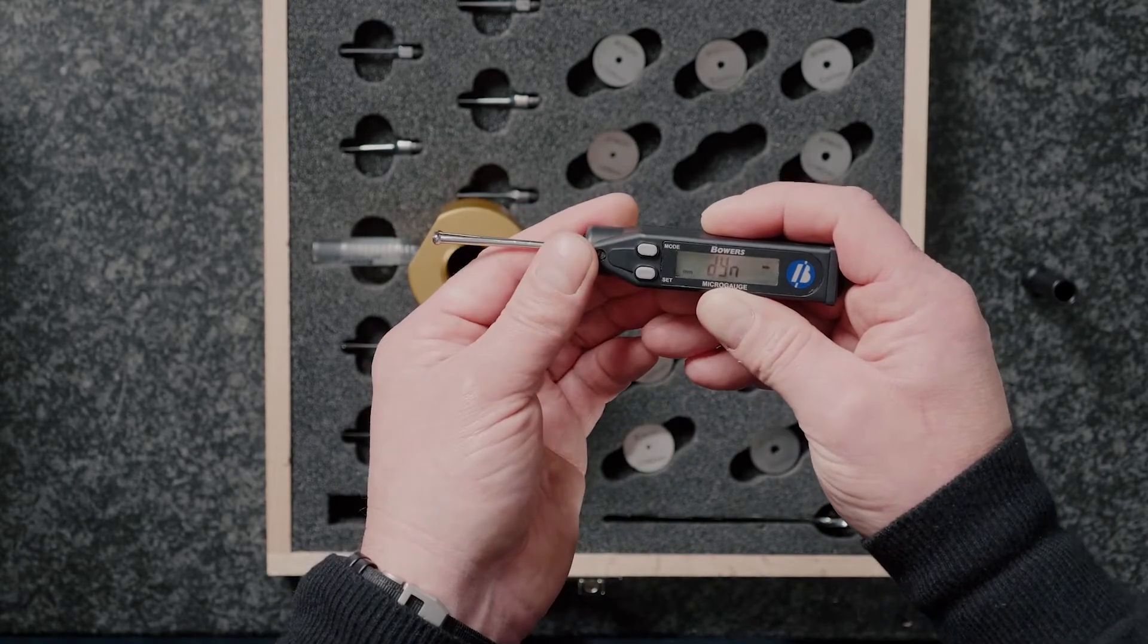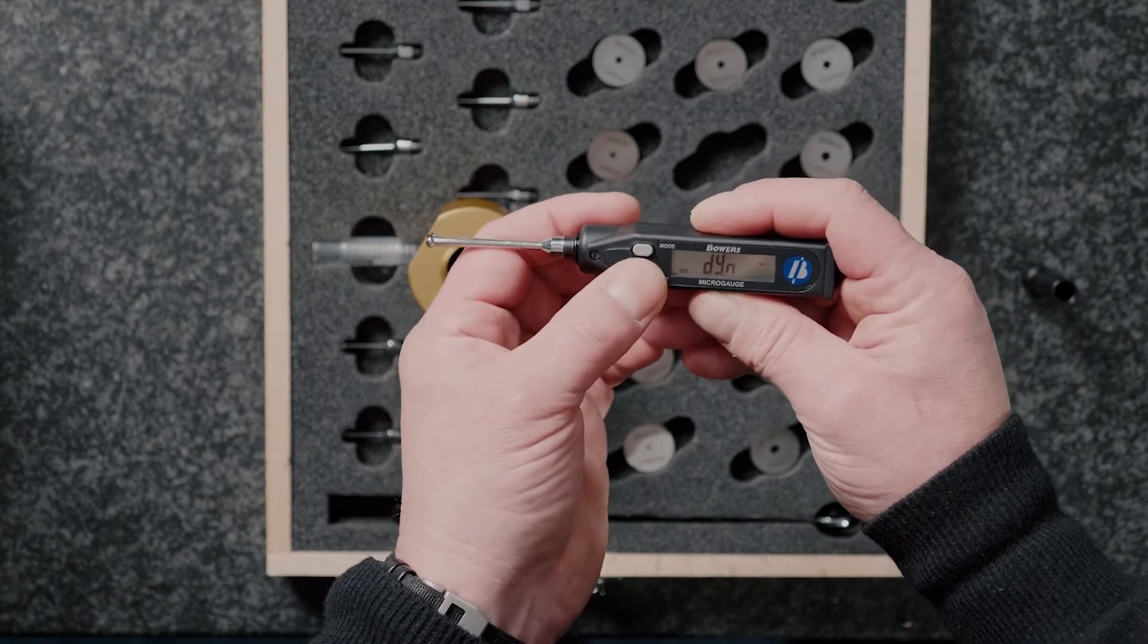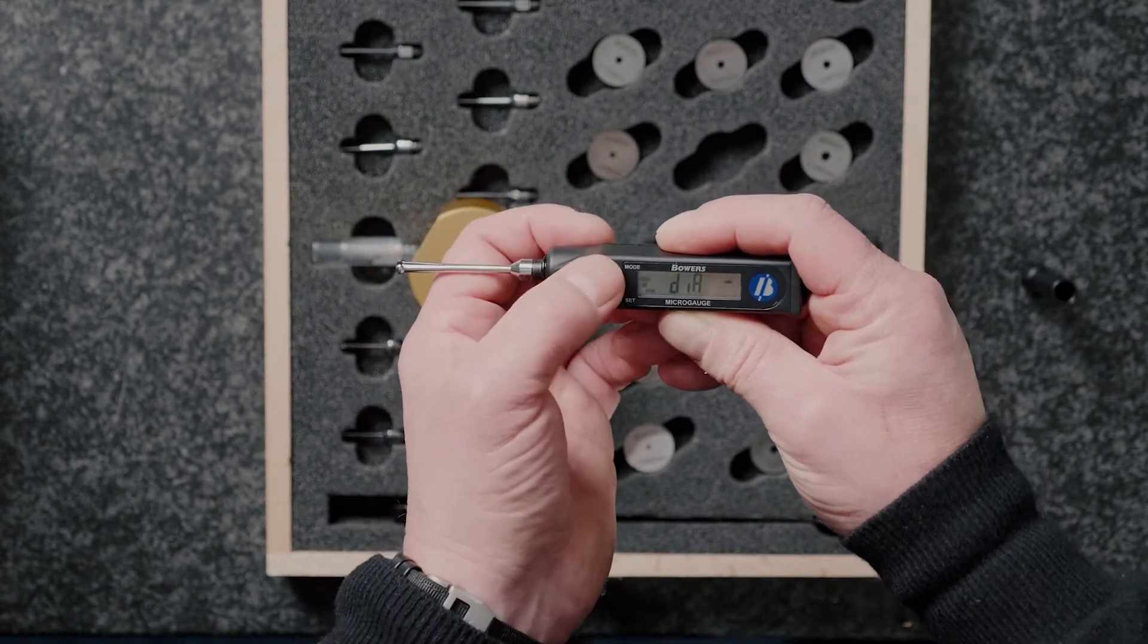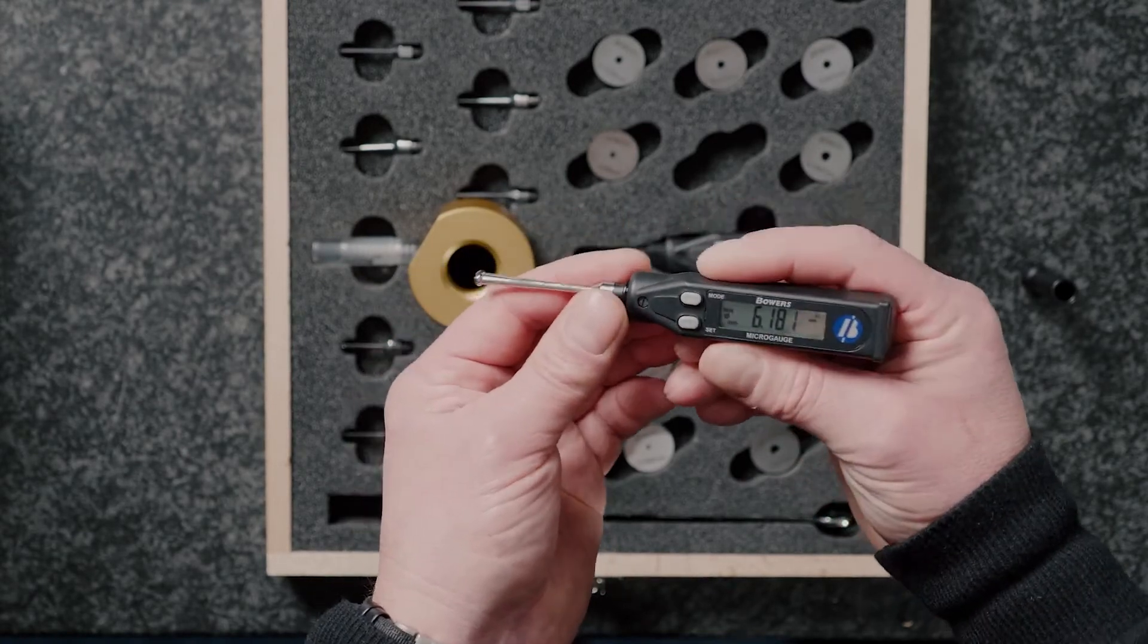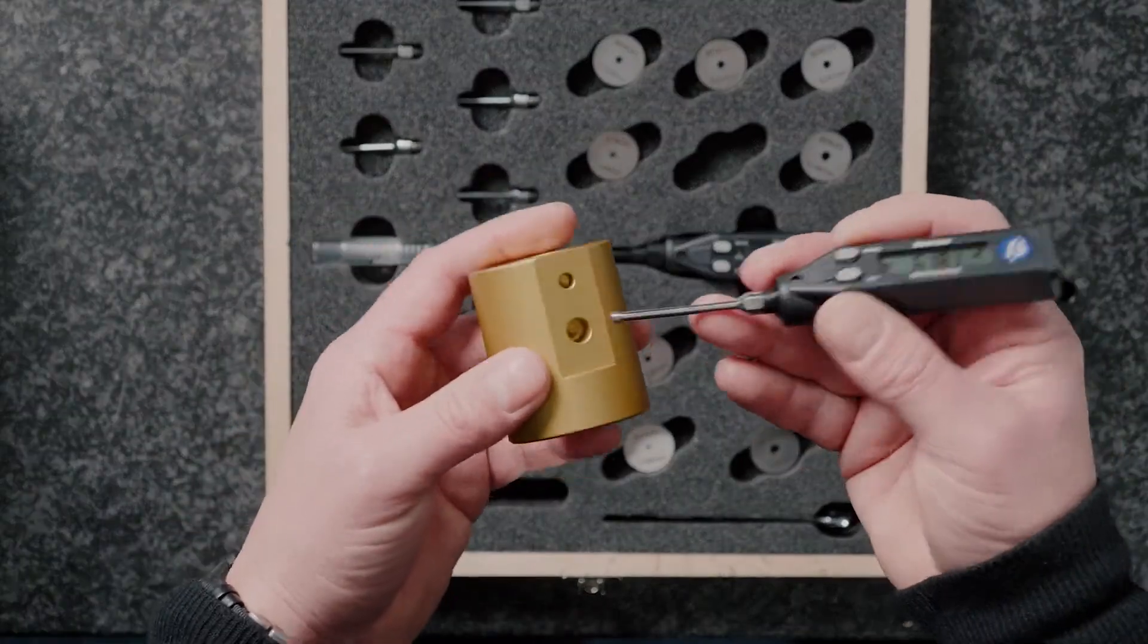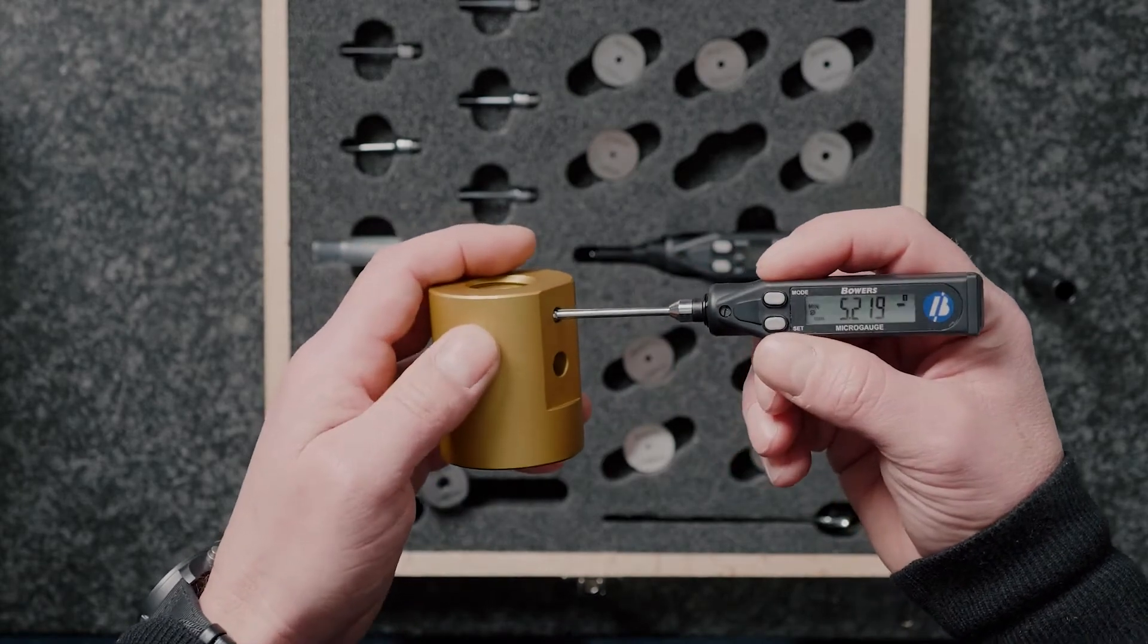If you hold mode down, we can see we've gone into dynamic mode. And if I scroll through the options here, I can come to diameter. So I'm going to select diameter. And what that does is tells the gauge that you want to freeze the display at the smallest value as you roll through the diameter.